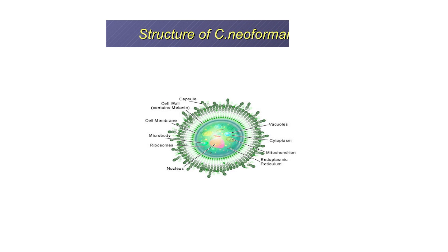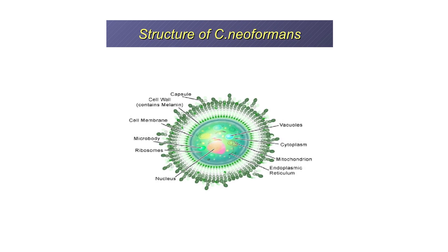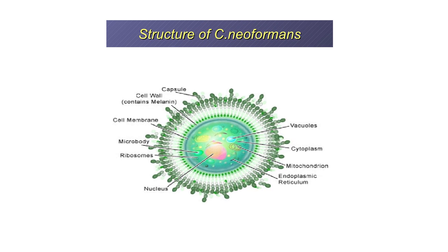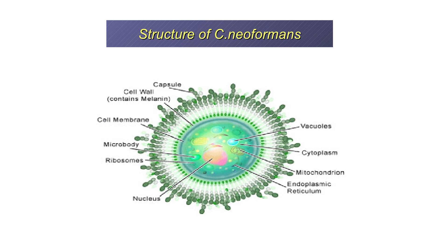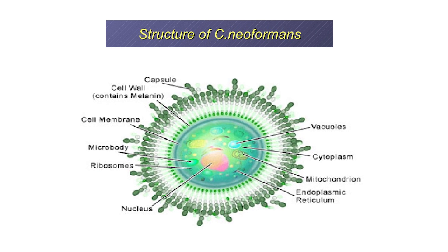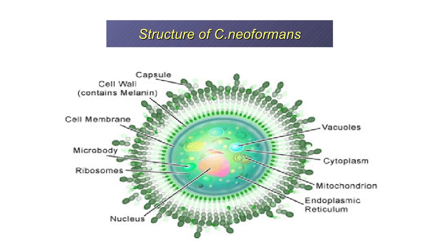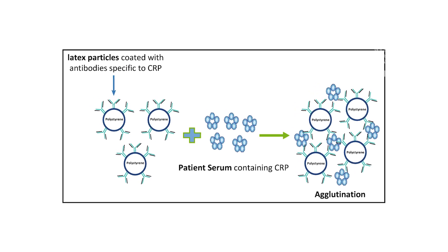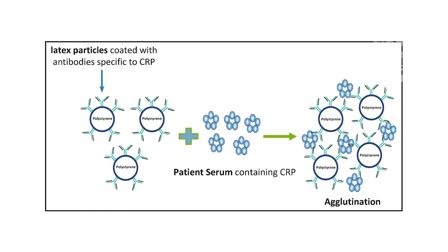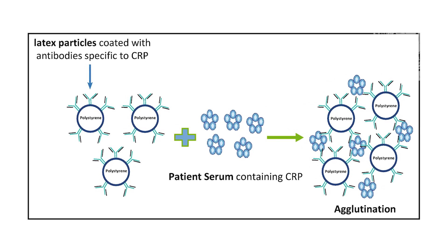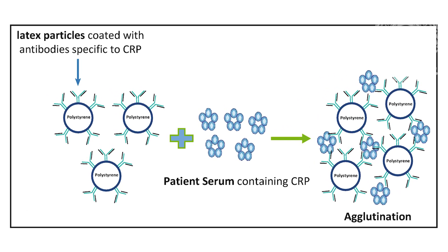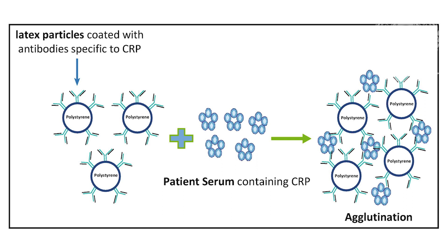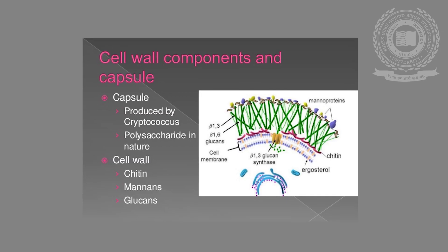Capsule: Some fungi produce an extracellular polysaccharide in the form of a capsule — for example, Cryptococcus species. The capsular material determines virulence and plays an important role in eliciting the host immune response, and provides the basis for diagnostic tests like the latex agglutination test for Cryptococcus.